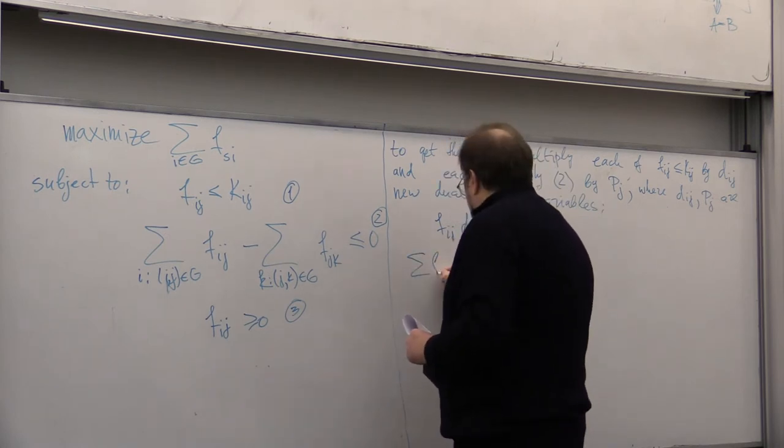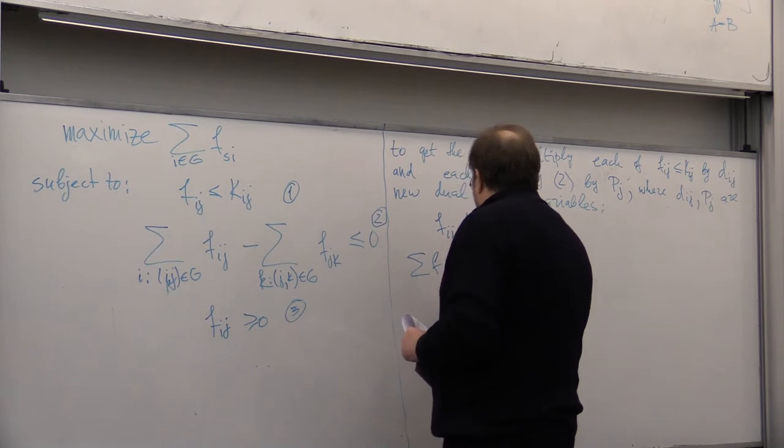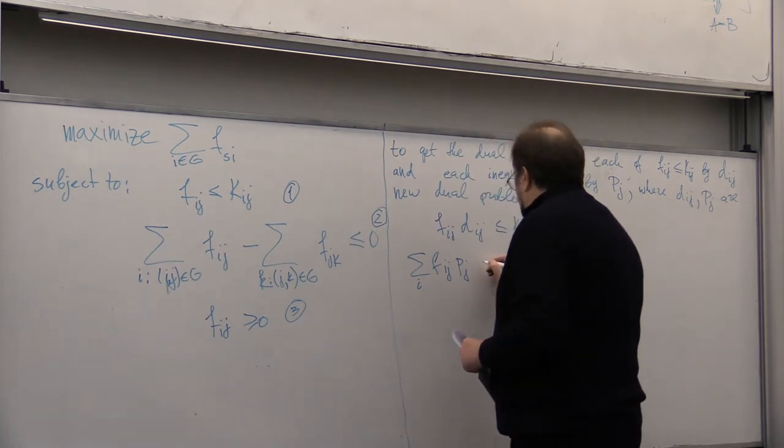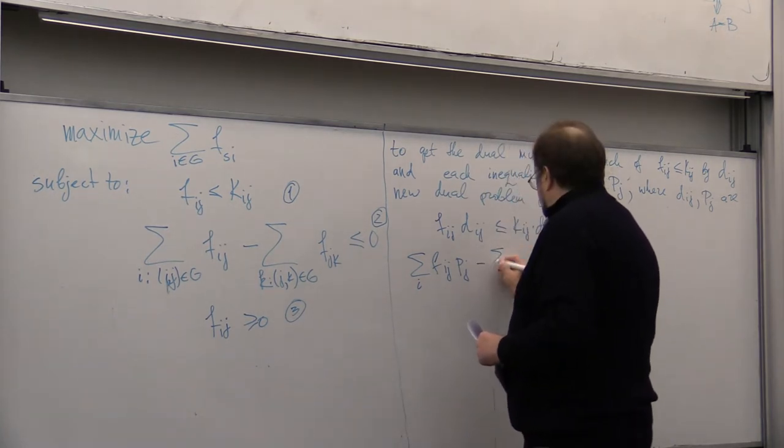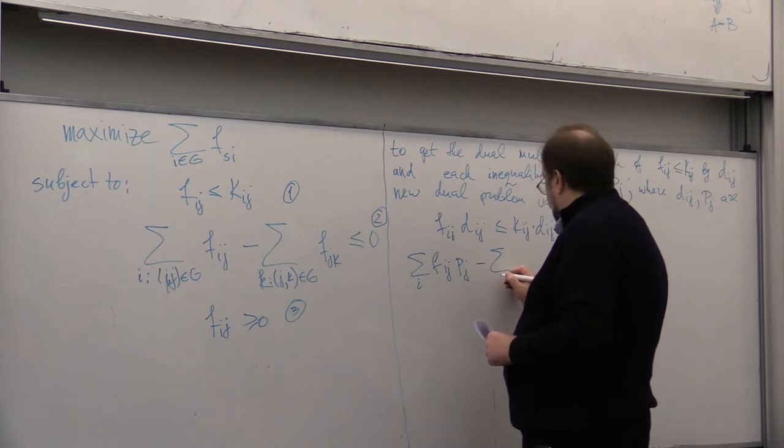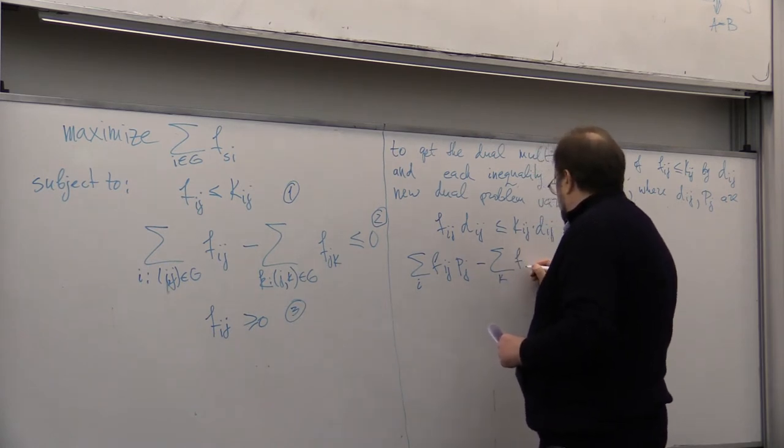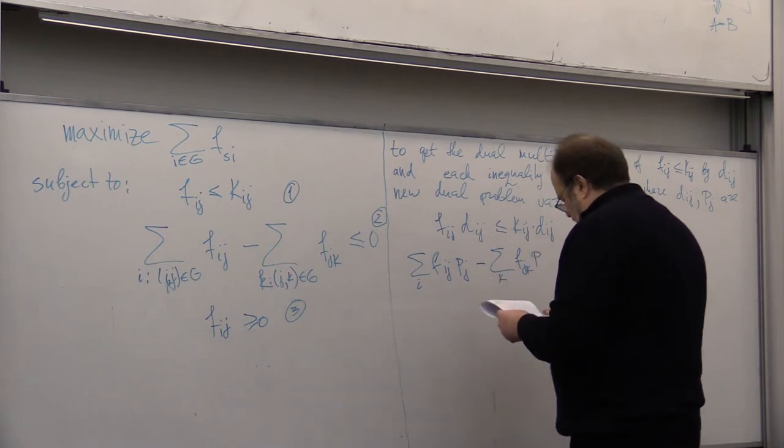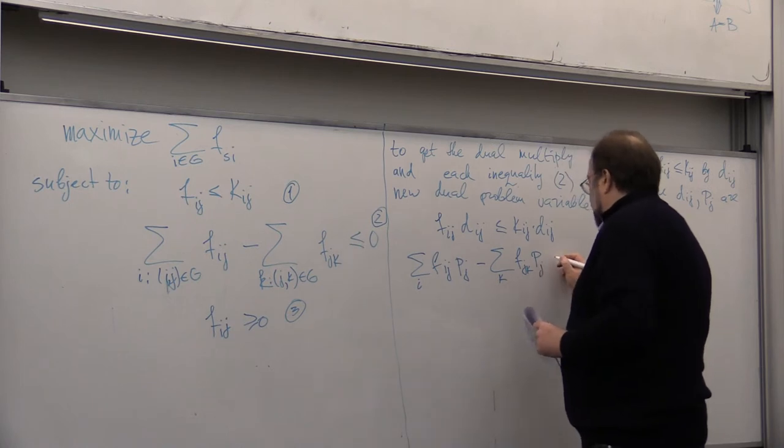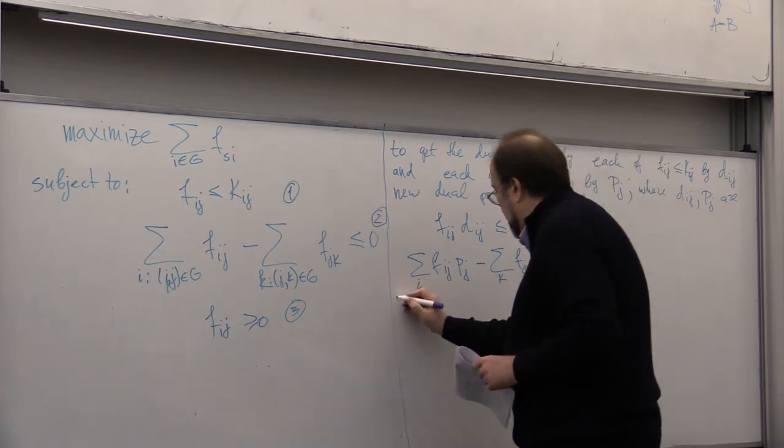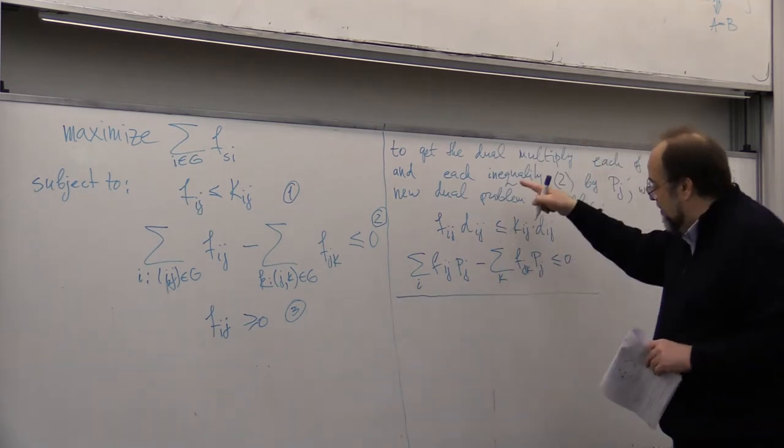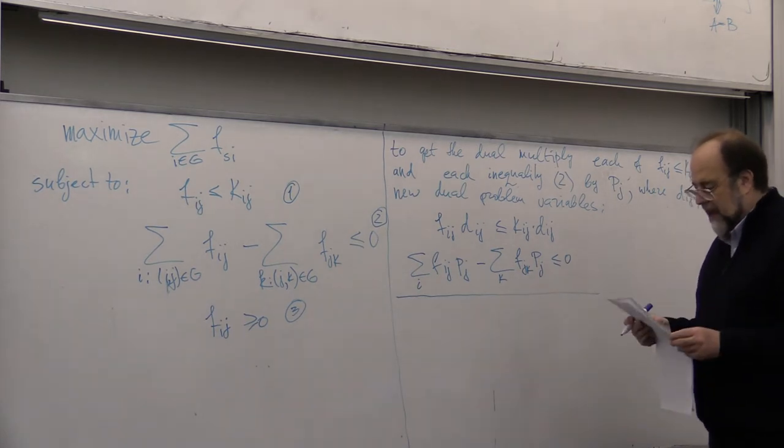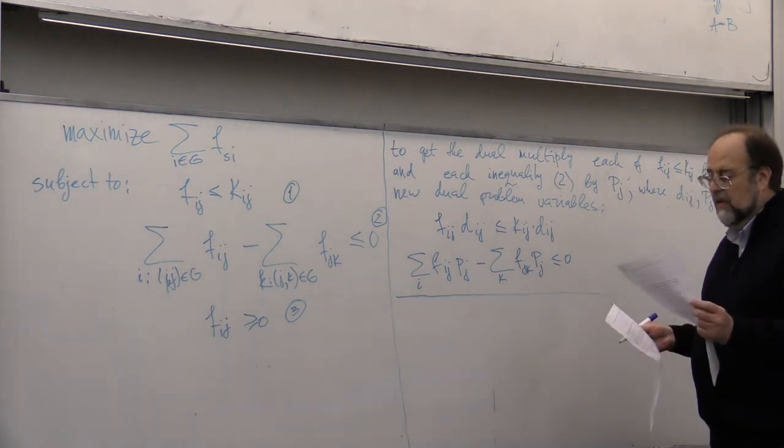You get that Fij times Dij is smaller or equal than Kij times Dij, and here you get the sum of Fij times Pij, summation over I minus sum, summation over K of Fij times Pij is smaller or equal than zero, and then we sum them up.